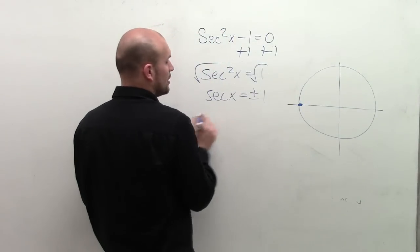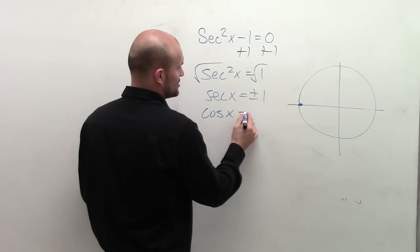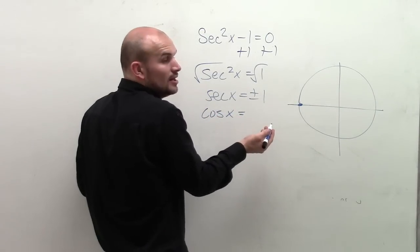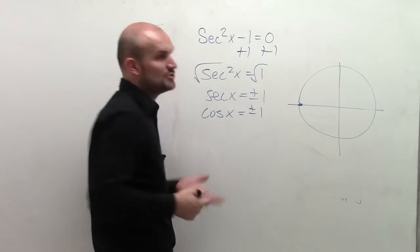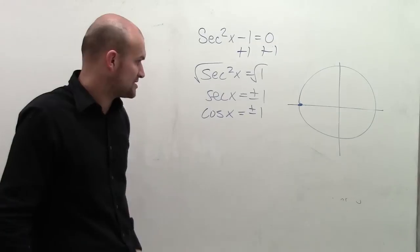That means we're dealing with coordinates on the unit circle. The reciprocal of this would be ±1 as well, and the reciprocal of ±1 over 1 is still ±1.